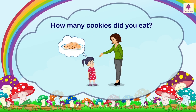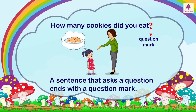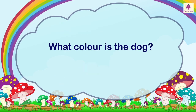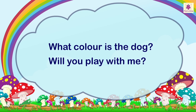Now look at this sentence: 'How many cookies did you eat?' This is a question. Notice the symbol used at the end of the sentence — it is called a question mark. A sentence that asks a question ends with a question mark. For example: 'What color is the dog?' and 'Will you play with me?'